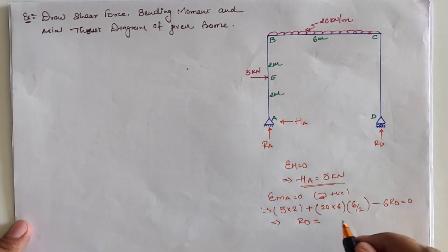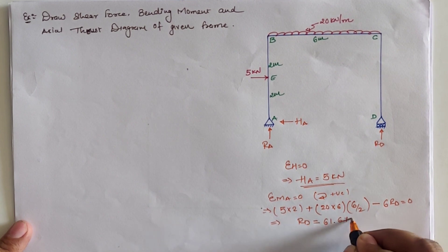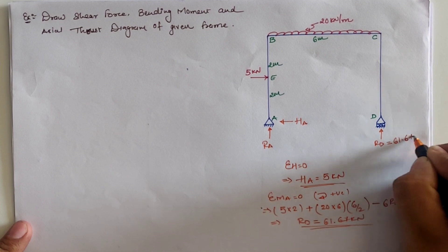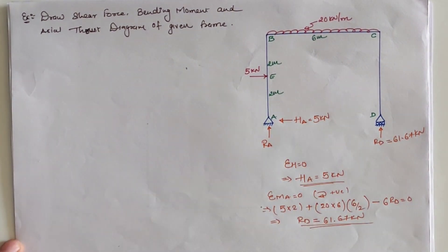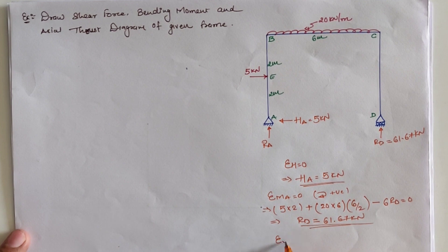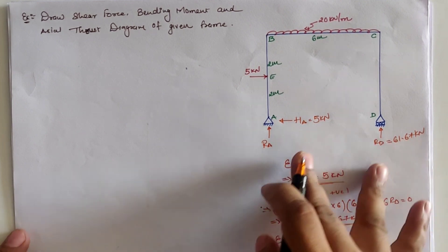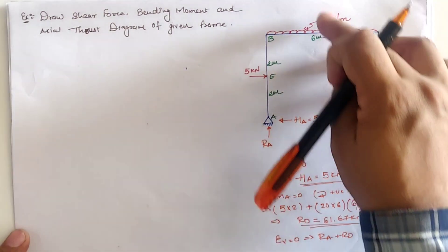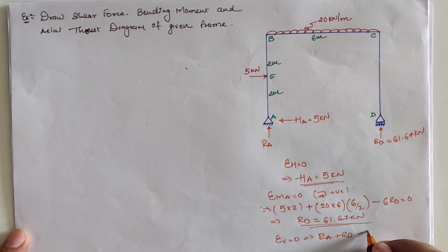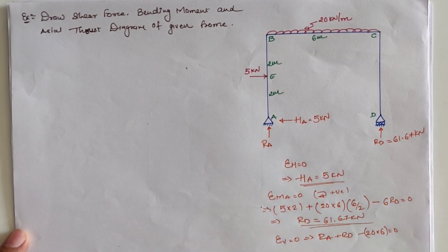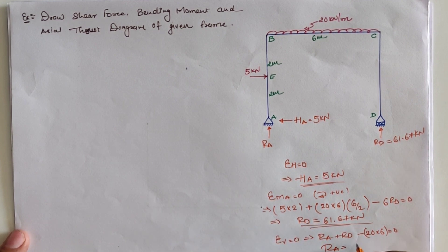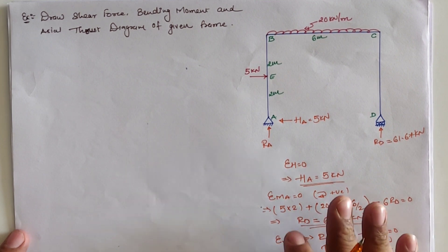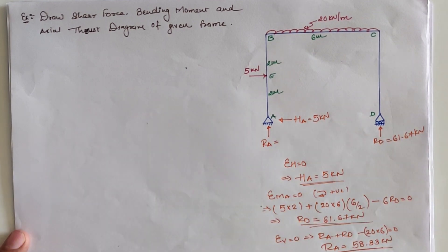Solving this, the reaction at location D is 61.67 kilo Newton. The third equilibrium condition is sigma V equal to zero. Taking vertical upward forces as positive, we have R_A plus R_D upward and 20 into six downward. Substituting R_D as 61.67 kilo Newton, the reaction at location A is 58.33 kilo Newton.